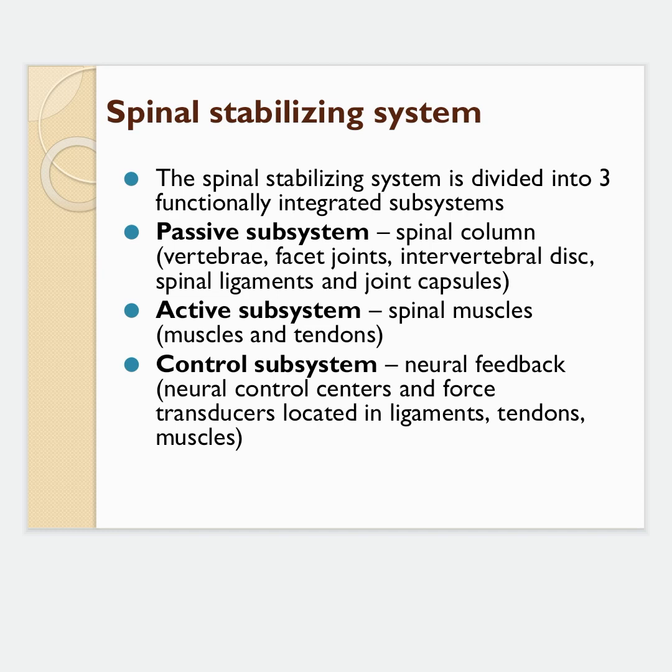The second is the active subsystem, which includes spinal muscles and tendons. The third is the neural control system, which includes neural feedback, neural control centers, and force transducers located in ligaments and tendons. Together, these three systems stabilize the spine.